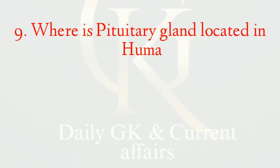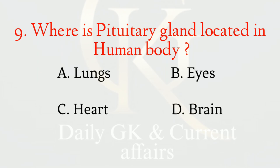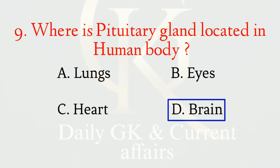Where is the pituitary gland located in the human body? The correct option is d: brain.